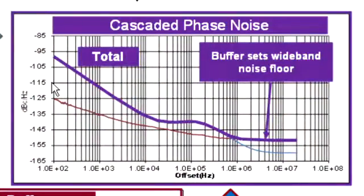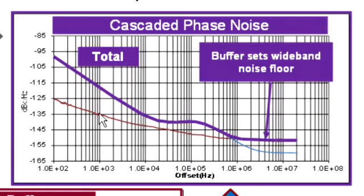In the upper right-hand corner we see a phase noise plot that represents the output of that clock buffer being driven by the clock generator. This trace represents the total output phase noise, and we've superimposed the original phase noise of the clock source along with the residual noise of the clock buffer. At low offsets, the residual noise of the buffer has little to no impact because it's many dB below the phase noise of the clock generator. However, at wider offsets, the wideband noise of the clock buffer is setting the noise floor at the output.